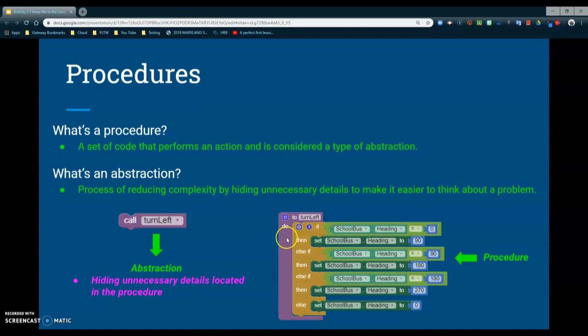Take a look on your right-hand side. You can see we've created this procedure and inside of that procedure we have all of this code. This is not something your typical user really needs to see. All they need to see is that when we call the bus to turn left, it turns left. It doesn't need to see all the code behind the scenes that trigger that bus to make that rotation of 90 degrees. We've created a procedure which is basically our abstraction that is hiding that information from the user to make it more easily understandable.